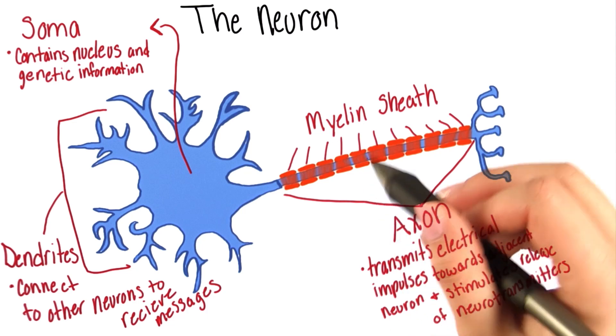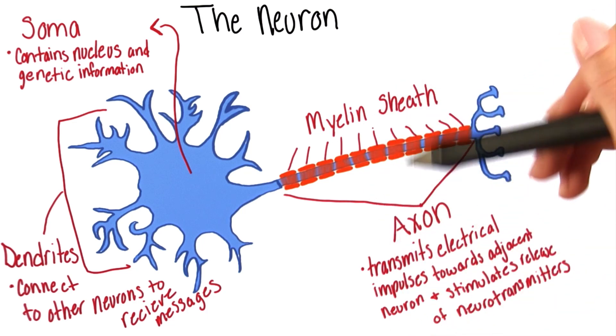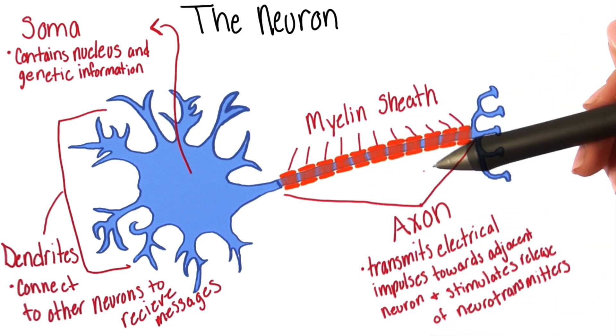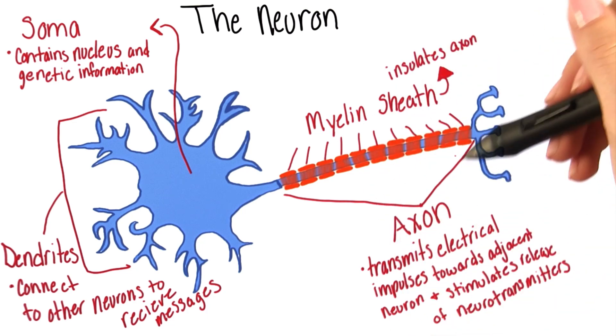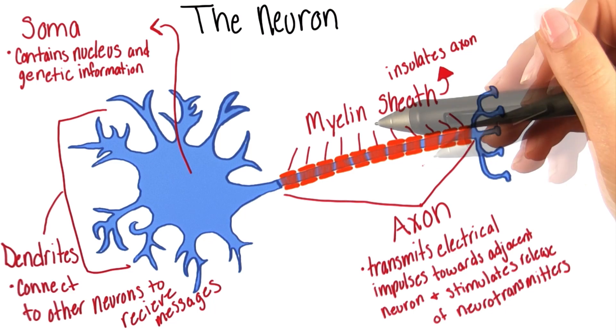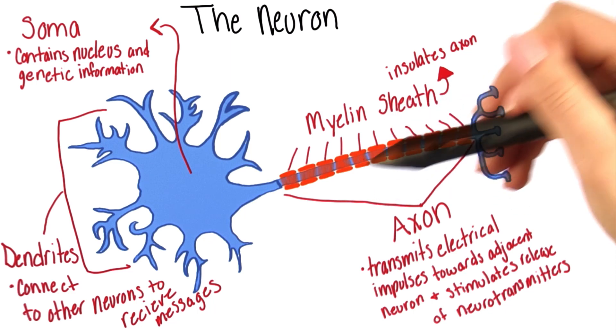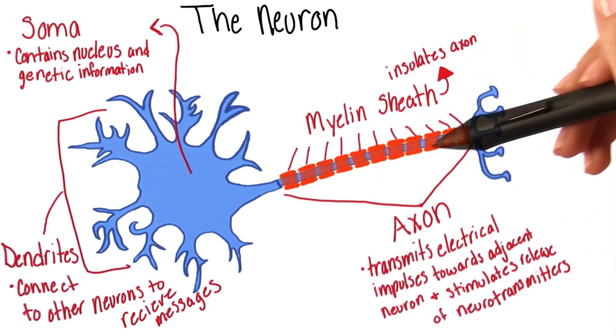Some axons have a myelin sheath wrapped around them. The myelin sheath insulates the axon and makes the nerve impulse more effective.